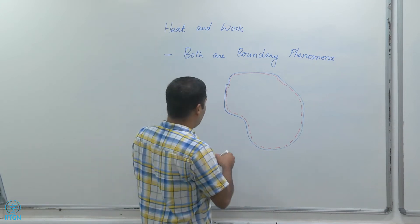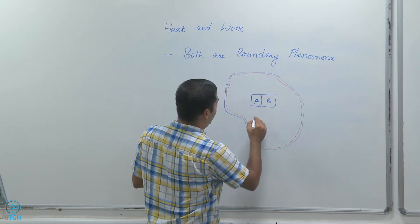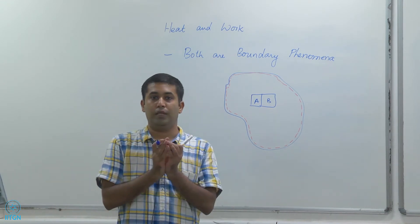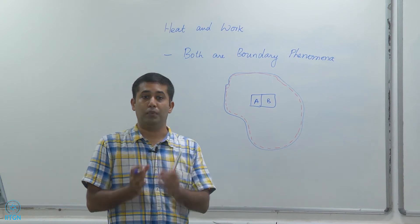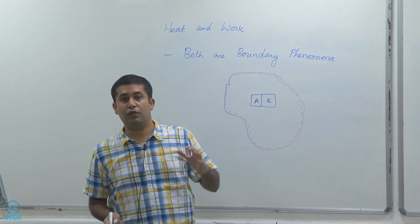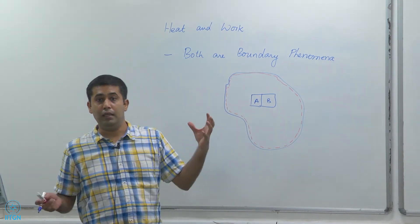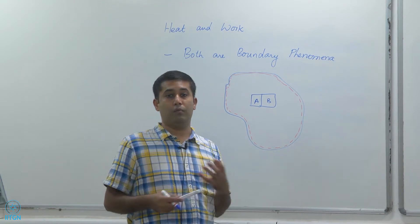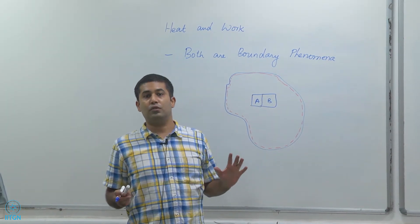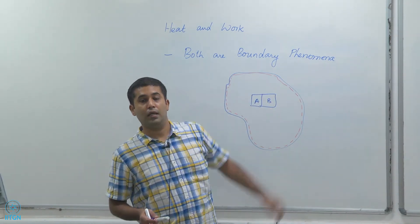For example, there could be an object A and an object B inside the system, and let's say the temperature of A is higher than the temperature of B. There would be some heat transfer if A and B are brought into contact. But as far as the overall system is concerned, there is no heat transfer even though there might be energy interaction between A and B. If I had drawn the system boundary around A or around B, then I would have a heat interaction for A or B as the case may be.